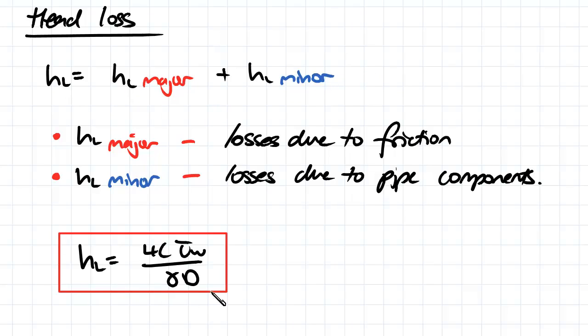Now a couple of videos ago, we already came up with an equation for the head loss and that's equal to 4L times the shear stress of the wall over gamma D. But this only applies for the head loss due to friction and it also requires us to know the shear stress at the wall which we don't always know, especially for turbulent flows.